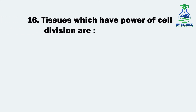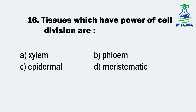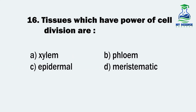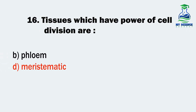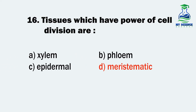Question 16. Tissues which have power of cell division are: A. Xylem, B. Phloem, C. Epidermal, and D. Meristematic. And the correct option is D. Meristematic.